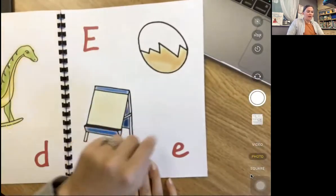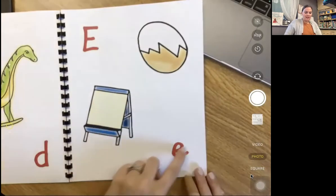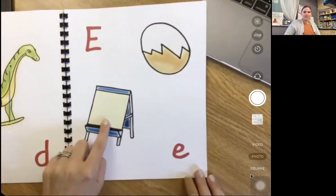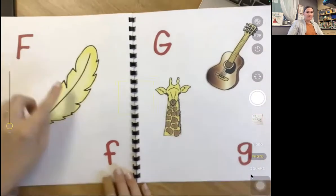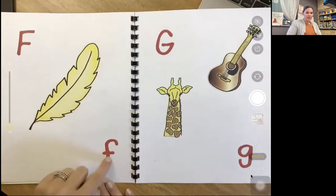E, eh, egg. E, eh, easel. F, fuh, feather. F, fuh, feather.